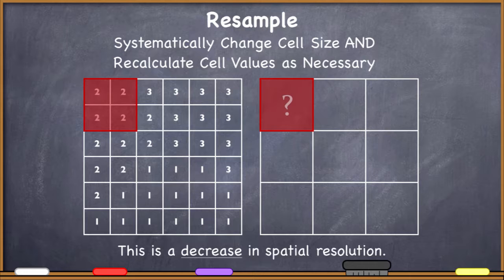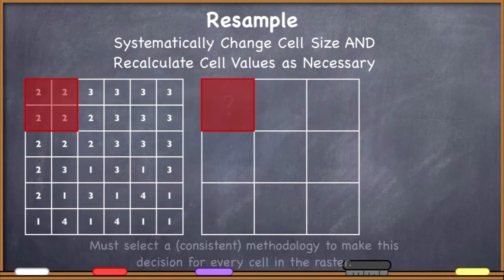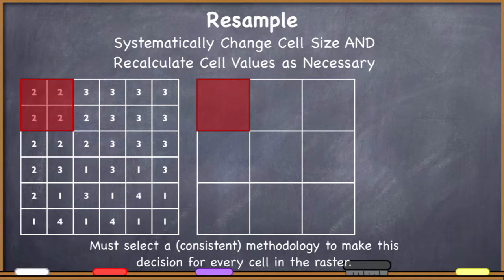In this case, it's a little bit obvious because all four of those cells that are now going to become one cell all have two. But you can see that I get more complicated as I go along here. Some of these cells are going to have multiple values in their four cells. So I have to select a consistent methodology to make this decision for every cell in the raster.